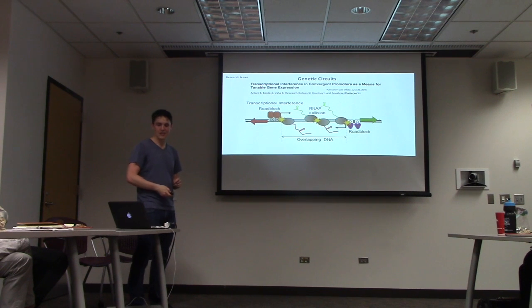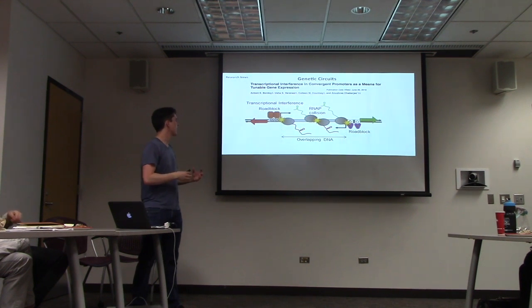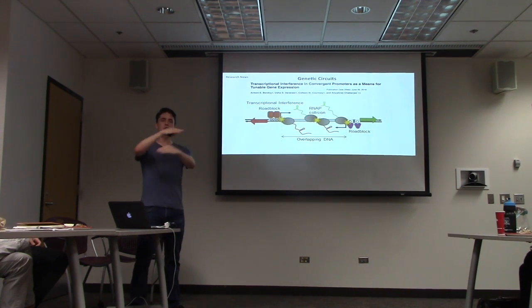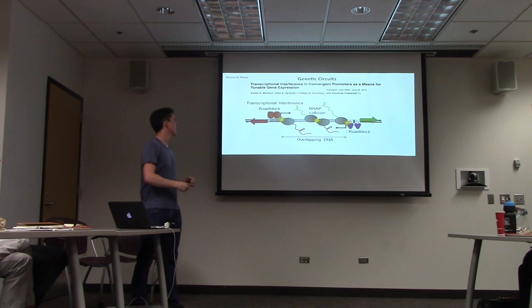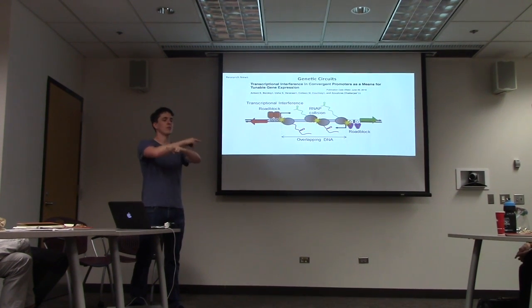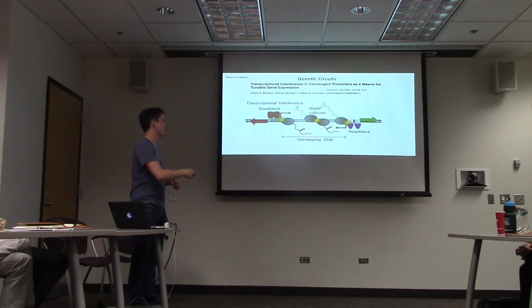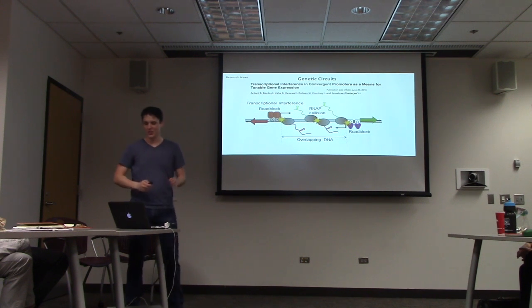And then finally for the genetic circuits, this lab, Chatterjee's lab, built this really interesting way of tuning gene expression using sort of overlapping promoters, which sort of transcribed in this direction and this direction, and then the RNA polymerases collide with each other, and you can either get sort of synergistic effects where if you turn this one on, this one will get more activated, or you can get negative effects where you tune this one down. So just an interesting tunable way of controlling gene expression.